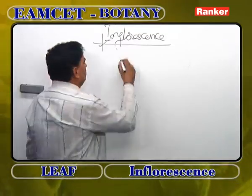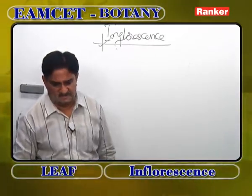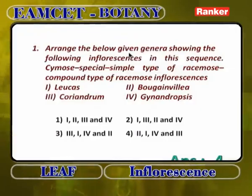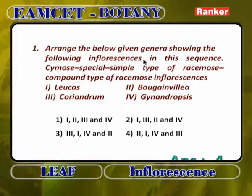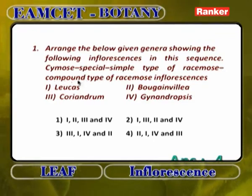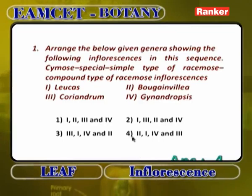Now let us discuss some important questions in inflorescence. First question: arrange the following genera showing these inflorescences in sequence — cymose inflorescence, special inflorescence, simple type of racimose inflorescence, compound type of racimose inflorescence — using Leucas, Bougainvillea, Coriandrum, and Gynandropsis. The answer is 2, 1, 4, 3.